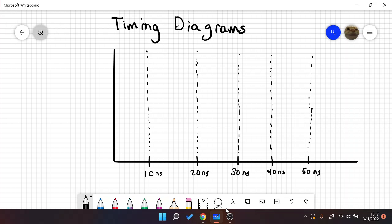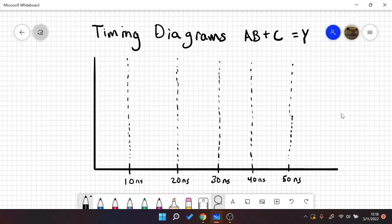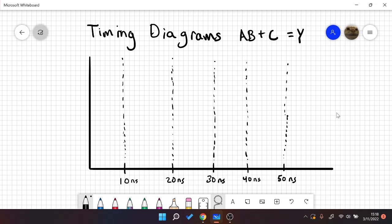So let's take the circuit AB plus C equals Y. So actually, let me move that up here. So we have AB plus C equals Y. That's what we're working with.